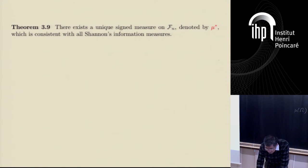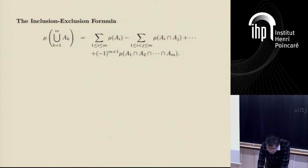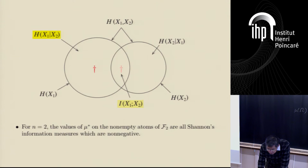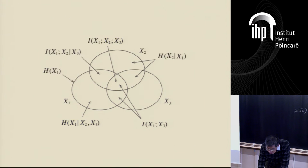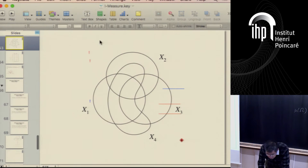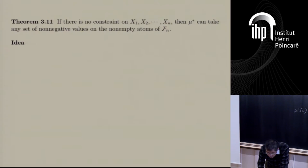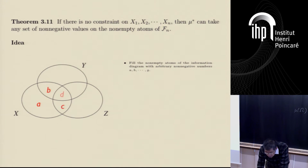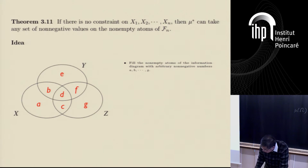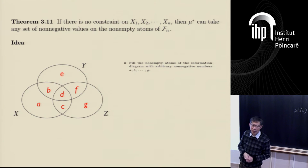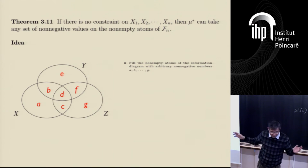I also talk about this theorem, which says that if you just throw in any non-negative number on the atoms, you can always realize it. So actually the question, if you just throw in any arbitrary number, is the same as characterizing all entropy functions gamma N star. This is actually how I started to think about the problem — by looking at the picture, I asked what numbers are valid and what numbers are not.